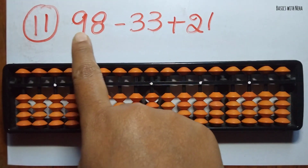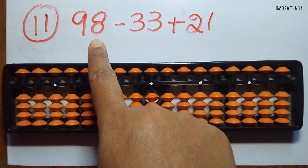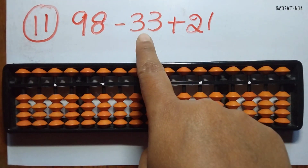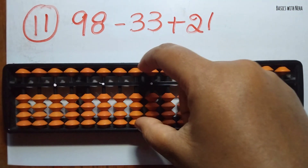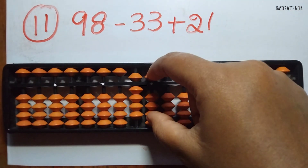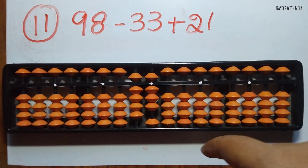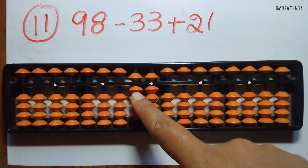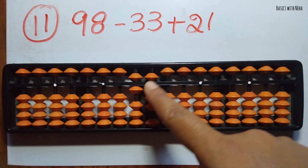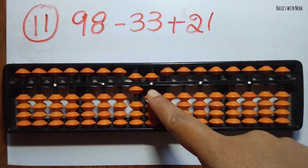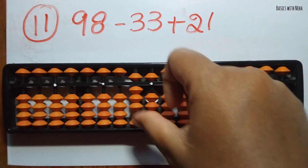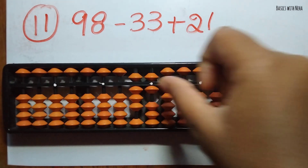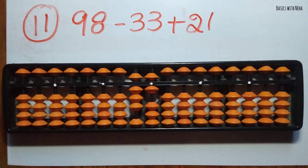The eleventh question: 98 minus 33 plus 21. First take 98, now you should minus 33 — minus 3 in the 10's rod and minus 3 in the 1's rod. Now you should add 21 — add 2 in the 10's rod and add 1 in the 1's rod. The answer is 86.